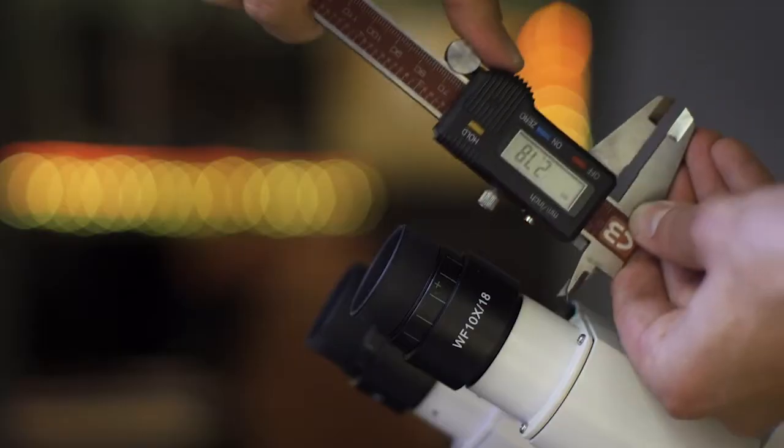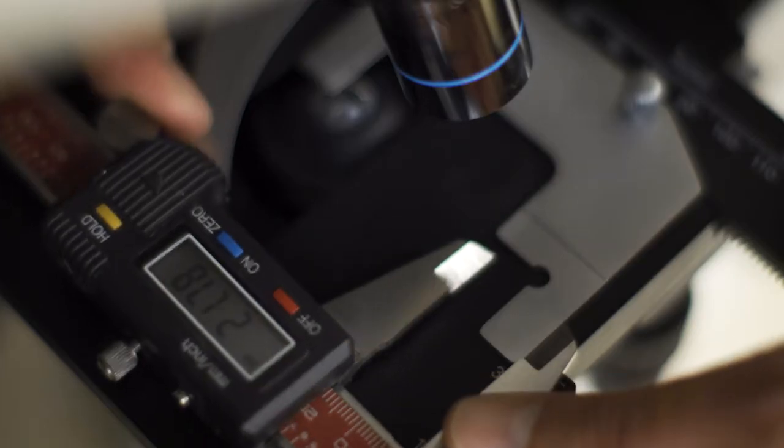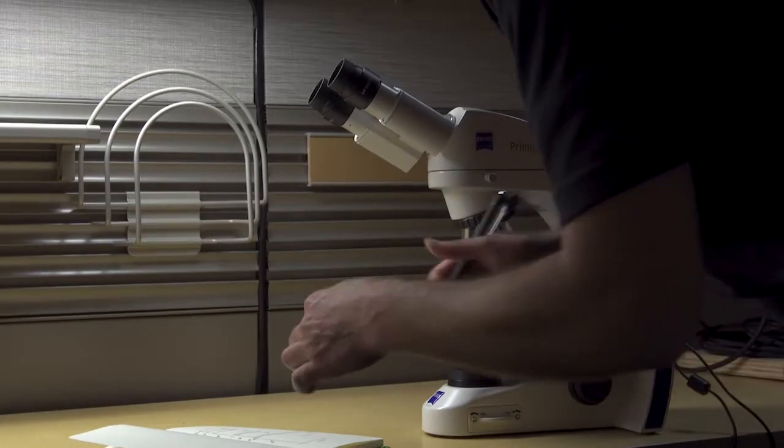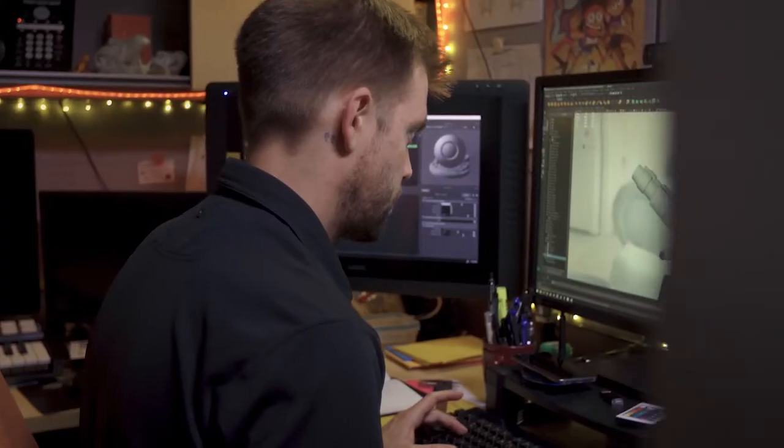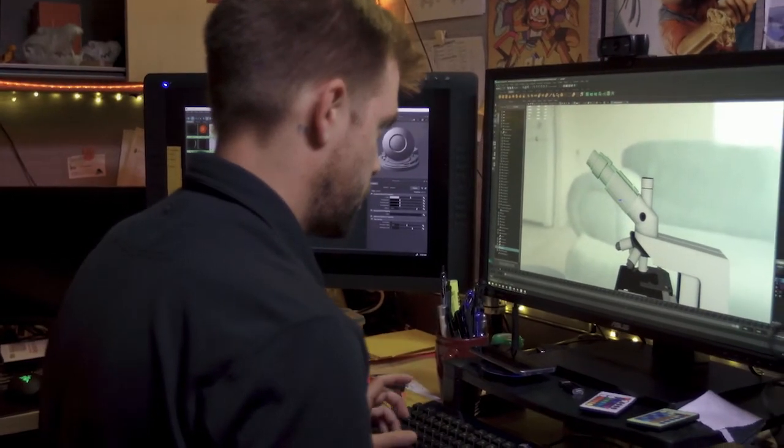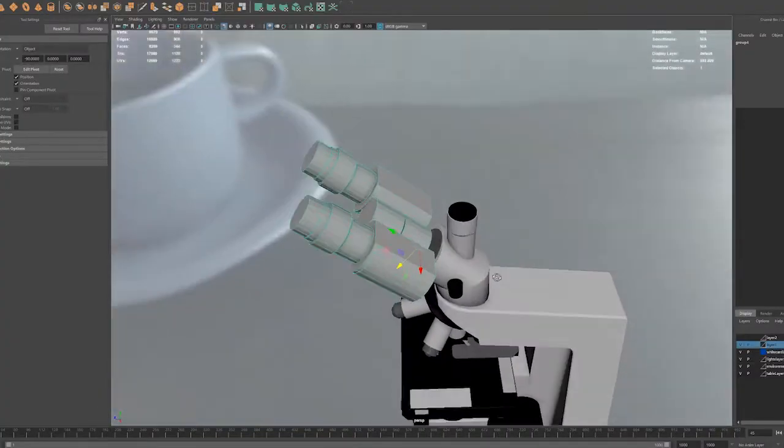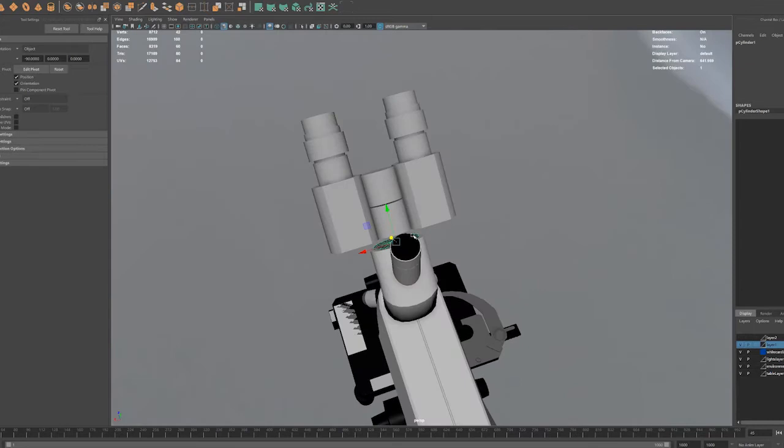Our first step in building the microscope was to figure out a way to replicate the in-person experience in an online interactive environment. So I took the exact microscope that students were using on campus and I measured it down to the millimeter so I could model the virtual one precisely. Then using 3D modeling software I was able to manipulate basic shapes like cubes and cylinders to build an accurate digital model of the real microscope.